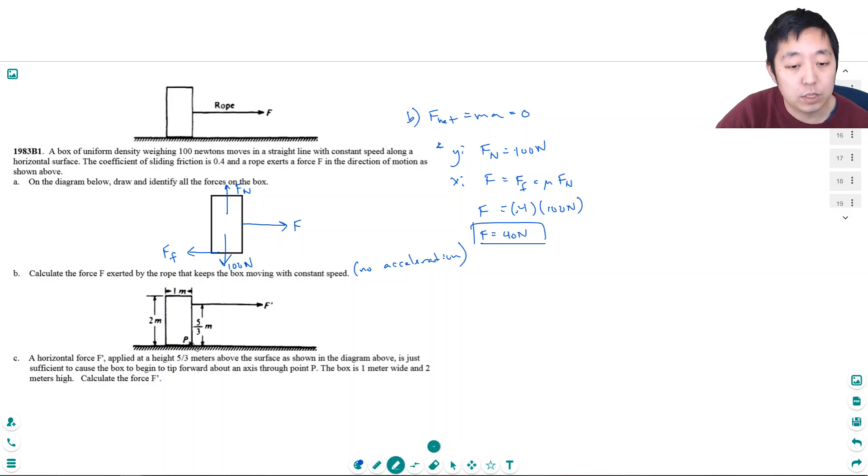The box is 1 meter wide and 2 meters tall. So calculate the force F prime. So it's just causing it to go down. We got to do a free body diagram here. I want to be very careful about this free body diagram. So I have a force F prime here, I have at the center force of gravity, and then I have a normal force.